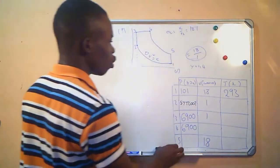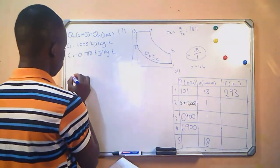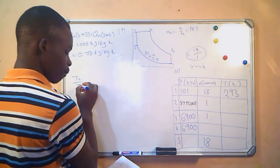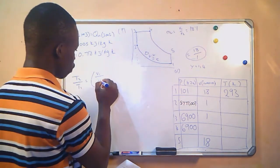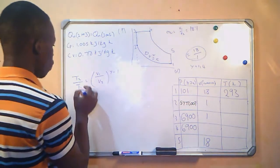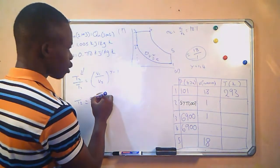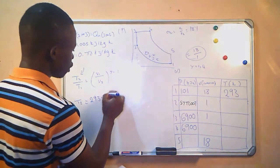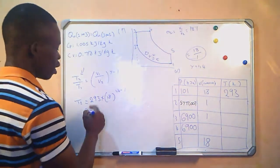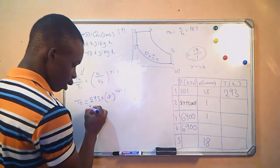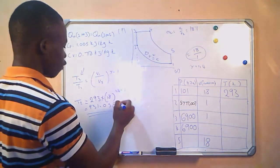Now we calculate T2 using the formula T2 divided by T1 equals (V1/V2) raised to gamma minus 1. Making T2 the subject, with T1 equal to 293 K and the compression ratio 18 raised to 1.4 minus 1, we get T2 equals 931.058 K.